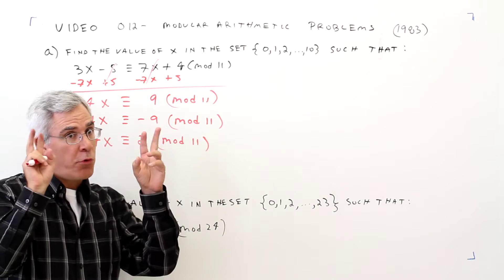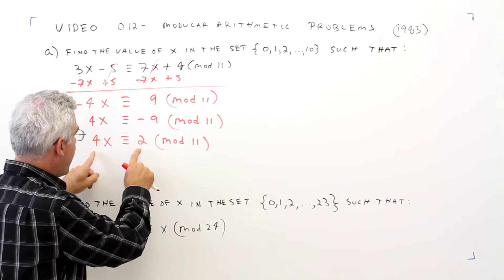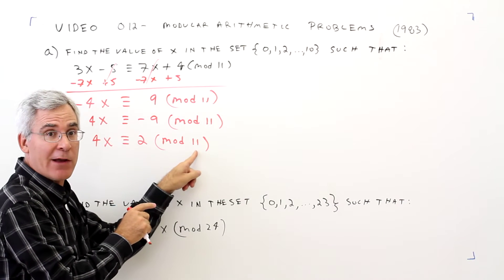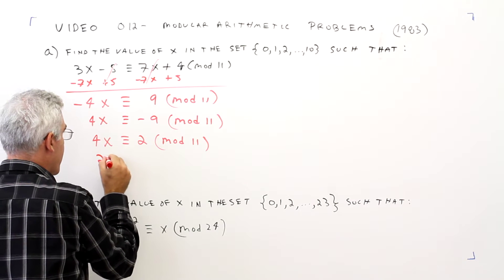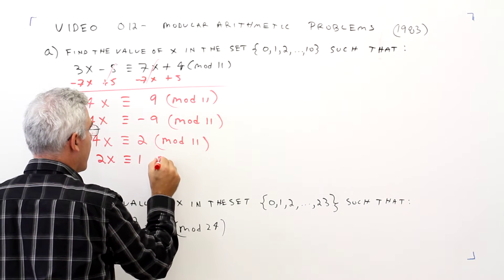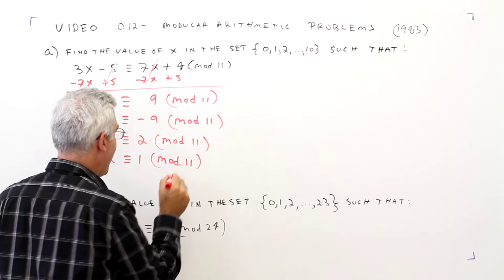I can do normal division because I've got a factor of 2 here and no factors of 2 in the mod. So divide by 2. 2x is congruent to 1 mod 11.